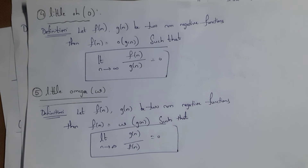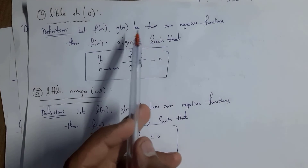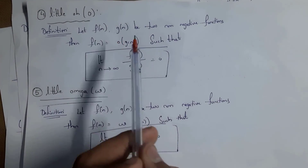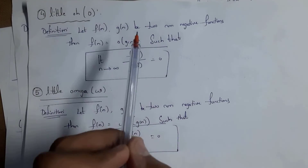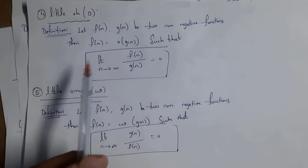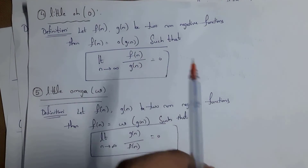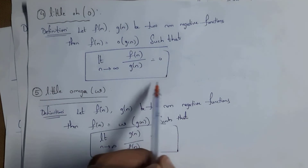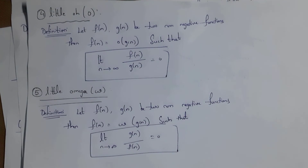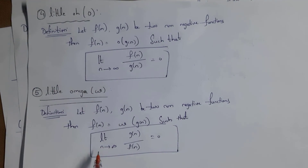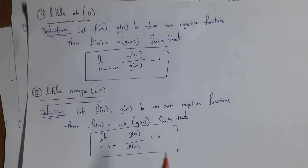Next is Little o notation — there is no example or graphical representation, only a definition. Let f(n) and g(n) be two non-negative functions. Then f(n) = o(g(n)) such that the limit as n tends to infinity of f(n)/g(n) equals 0. Fifth is Little omega notation — the definition is the same as Little o notation, with the difference that here the limit as n tends to infinity of g(n)/f(n) equals 0.